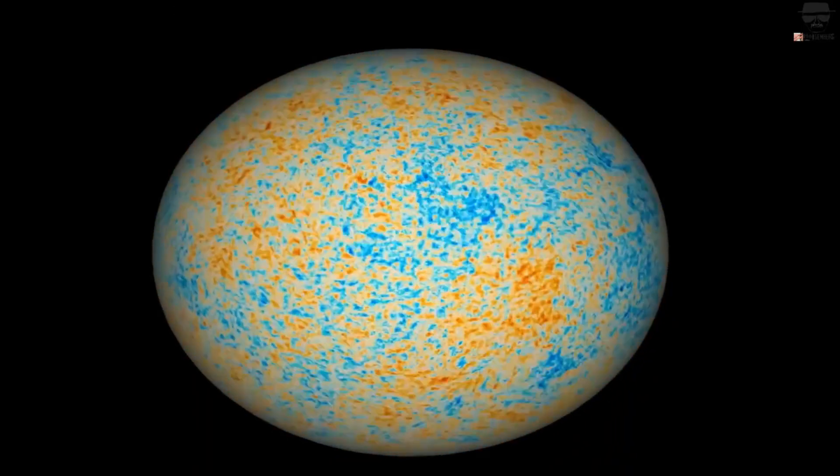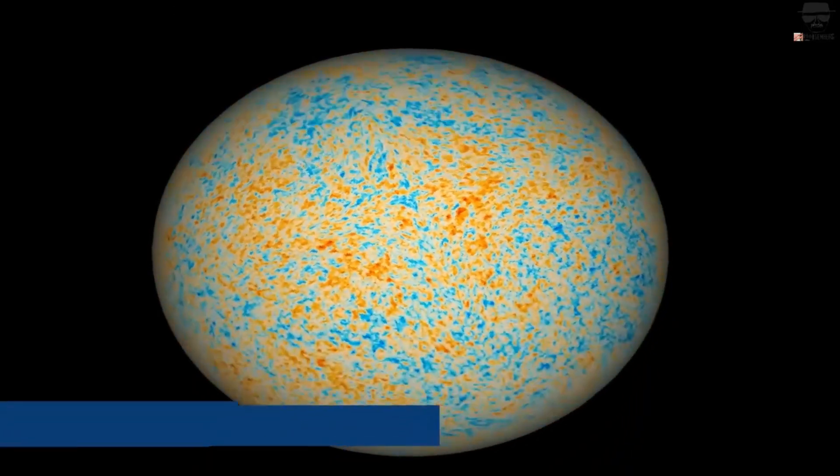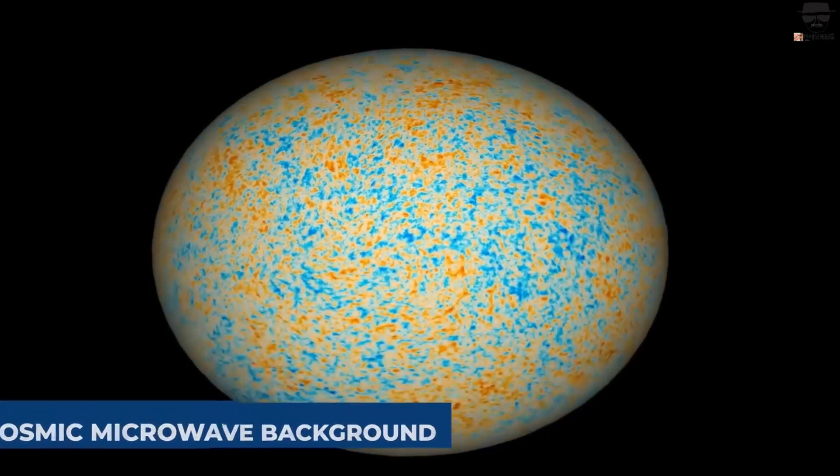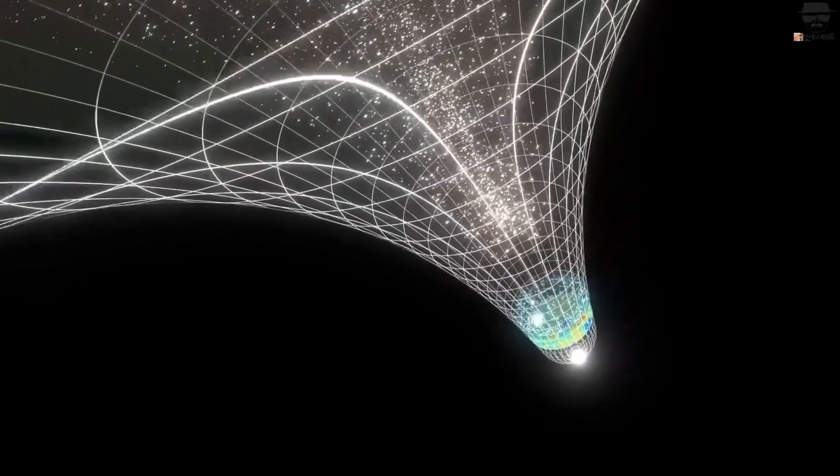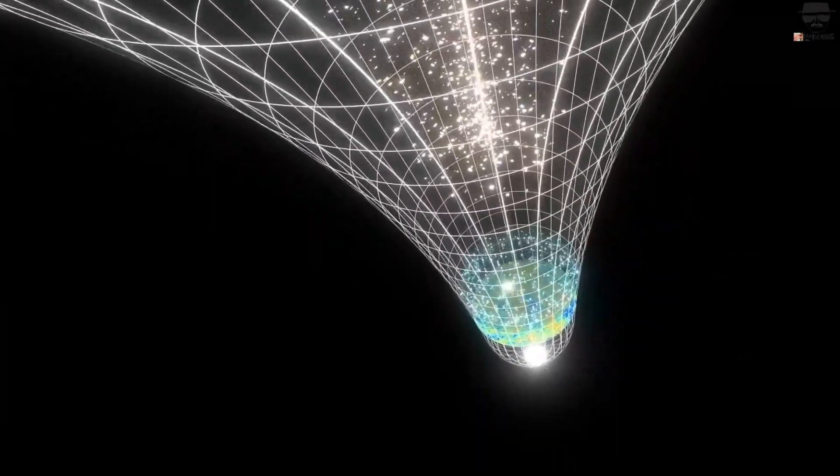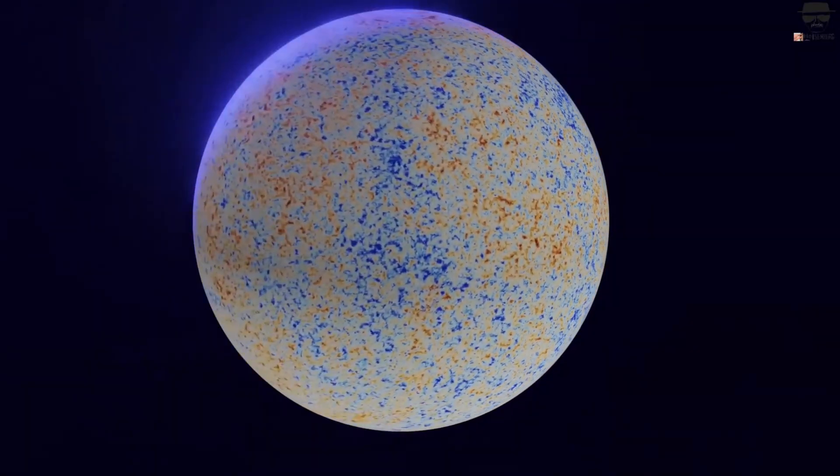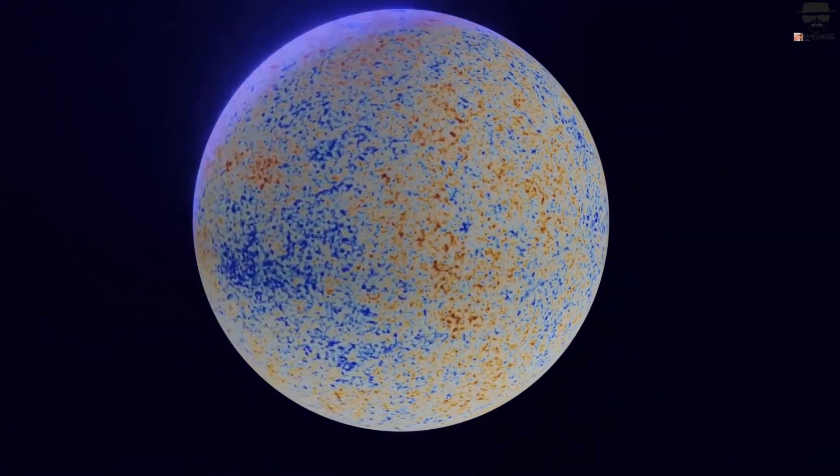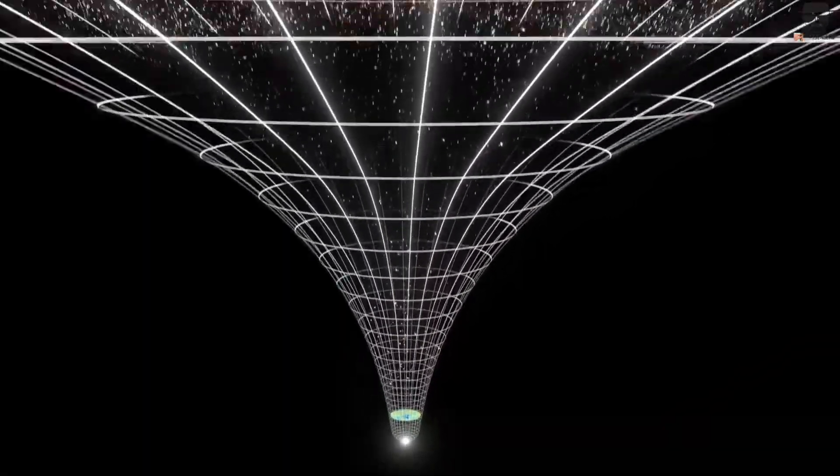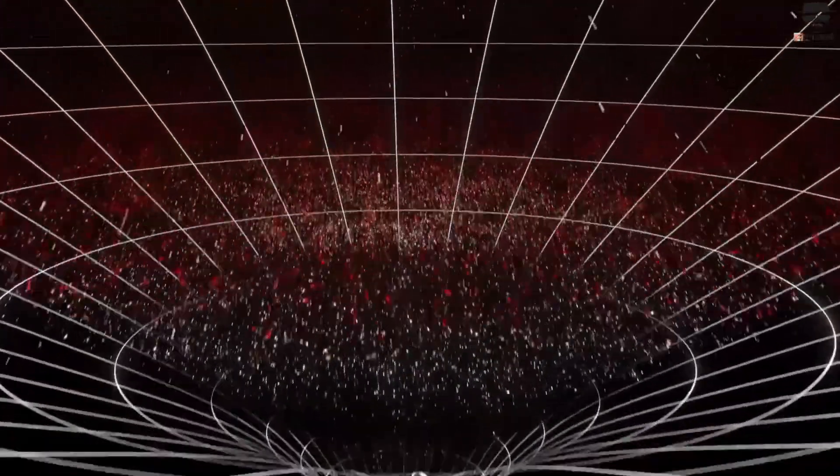This radiation, originally called the primeval fireball and now known as the cosmic microwave background, represented critical evidence that our universe is expanding and cooling because it was hotter and denser in the past. The farther back we extrapolate, the smaller, more uniform, and more compact things were.